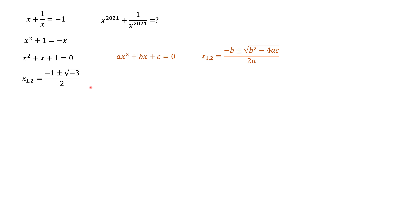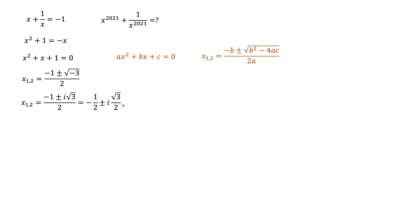We already said that the solutions of this equation are these values. Let's rewrite them in a more convenient way. We introduce the number i, which is the imaginary unit — what some people like to say is the square root of minus one. The next thing we would like to do is take these numbers and raise them to the power of 2021. To do that, it's more convenient to use the polar form of complex numbers.